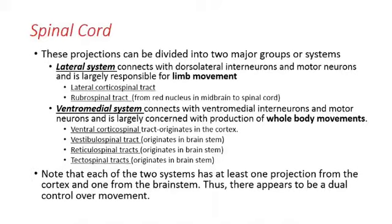Within the lateral system, we have two independent systems: one under the control of the cortex of the brain, and one under the control of the brain stem. The same is true for the ventromedial system — one system originates in the cortex, and the ventromedial system has three tracts under the control of the brain stem. So each of the two systems has at least one projection from the cortex and at least one from the brain stem.